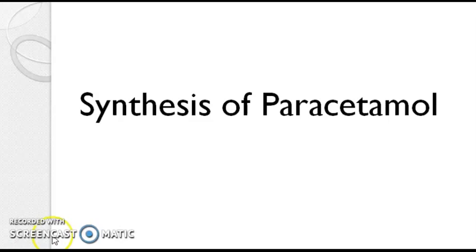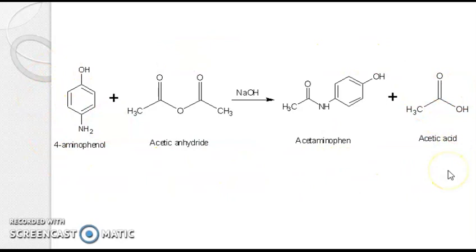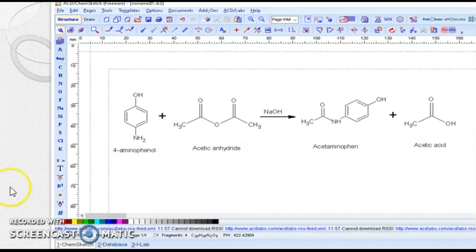The reaction for synthesis of paracetamol involves 4-aminophenol reacting with acetic anhydride in the presence of NaOH to form acetaminophen (paracetamol) and acetic acid. We will now learn how to draw this reaction in ChemSketch. Let me show you how this reaction will look when drawn.